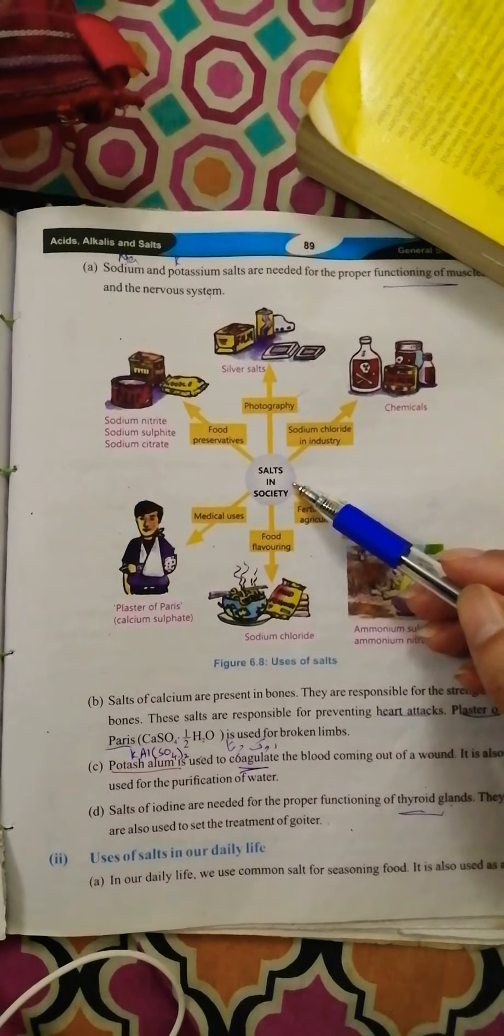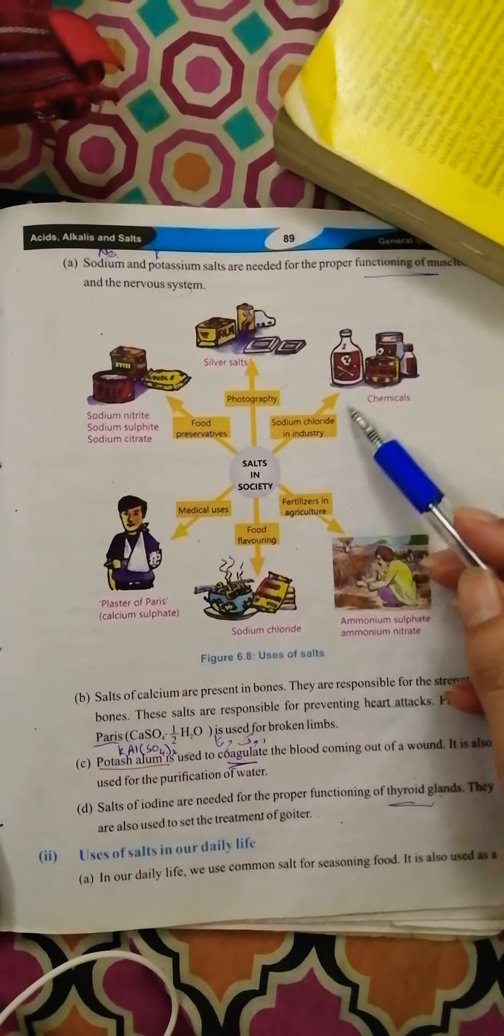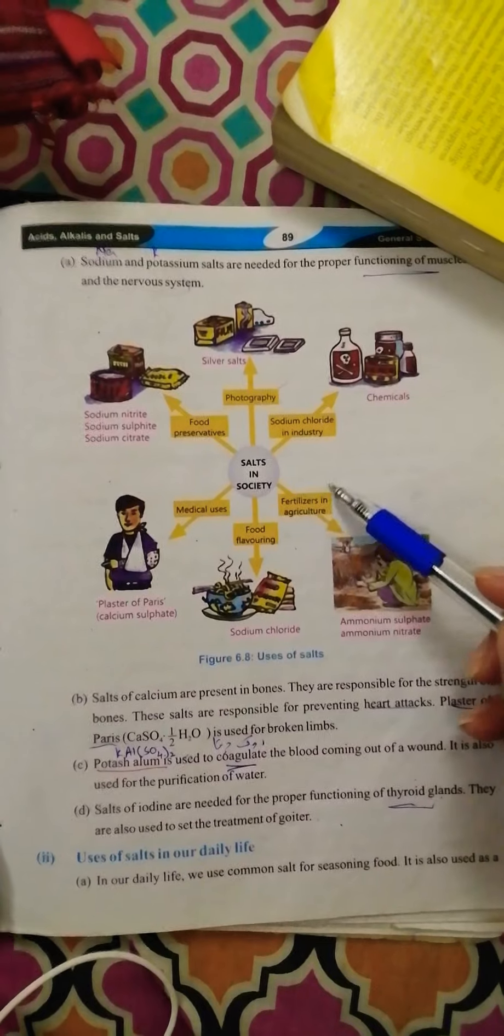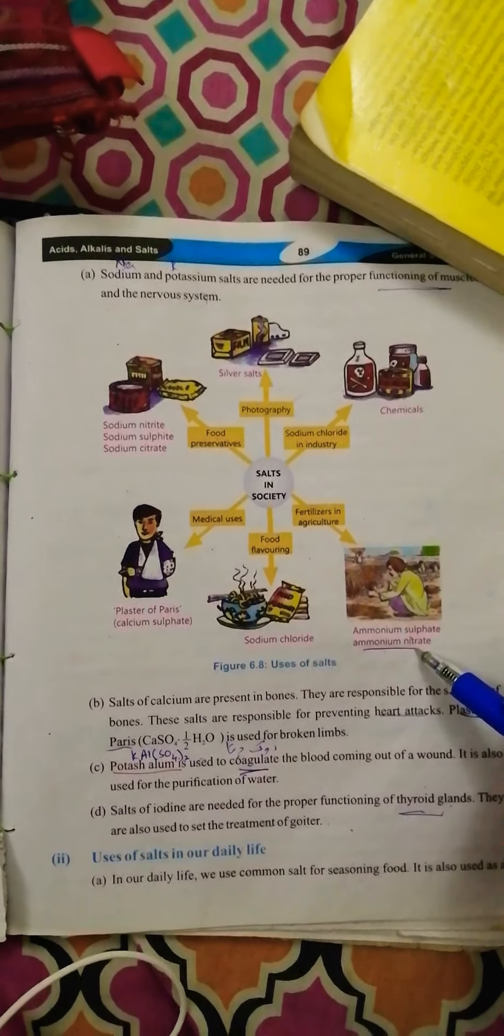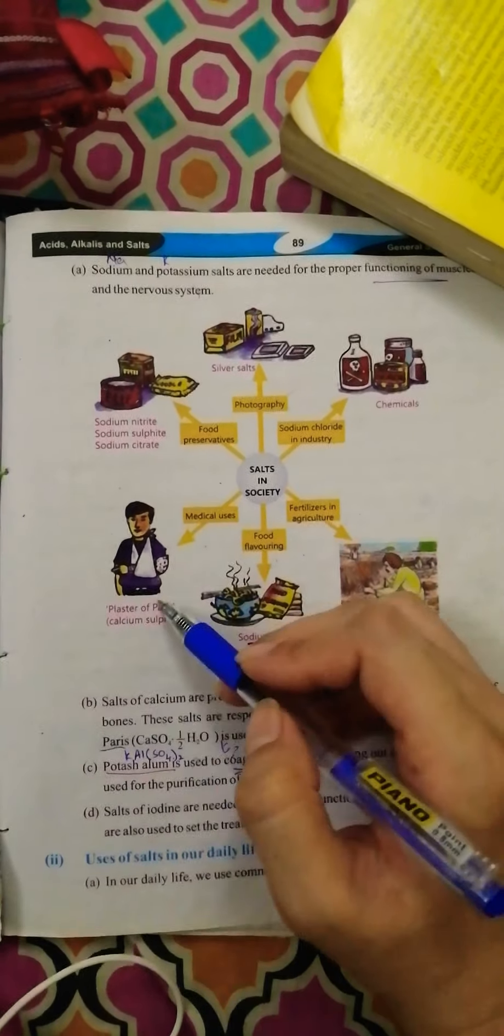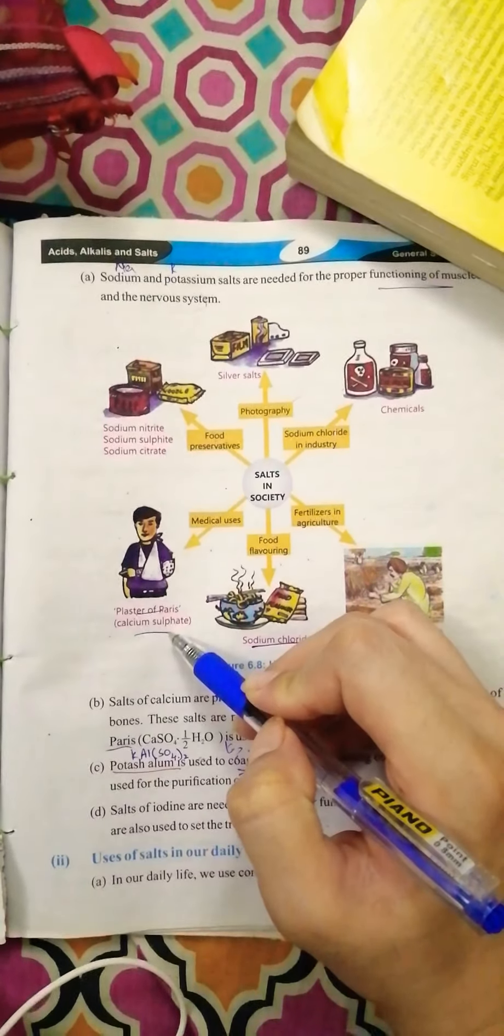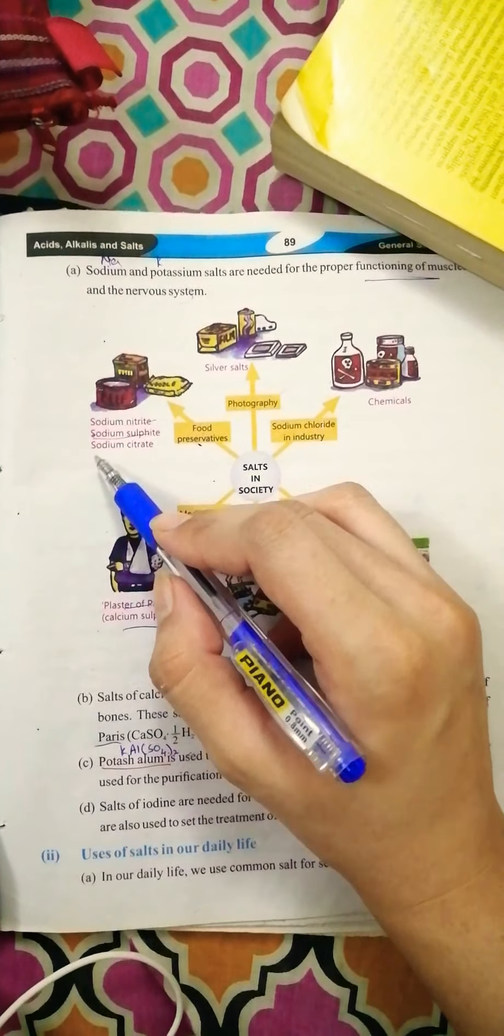In society you can use sodium chloride. In industry you can use different chemicals for fertilizers - ammonium sulfate and ammonium nitrate. Different fertilizers, food flavoring sodium chloride, medical uses plaster of paris calcium sulfate, food preservatives sodium nitrite sodium sulfate sodium citrate.